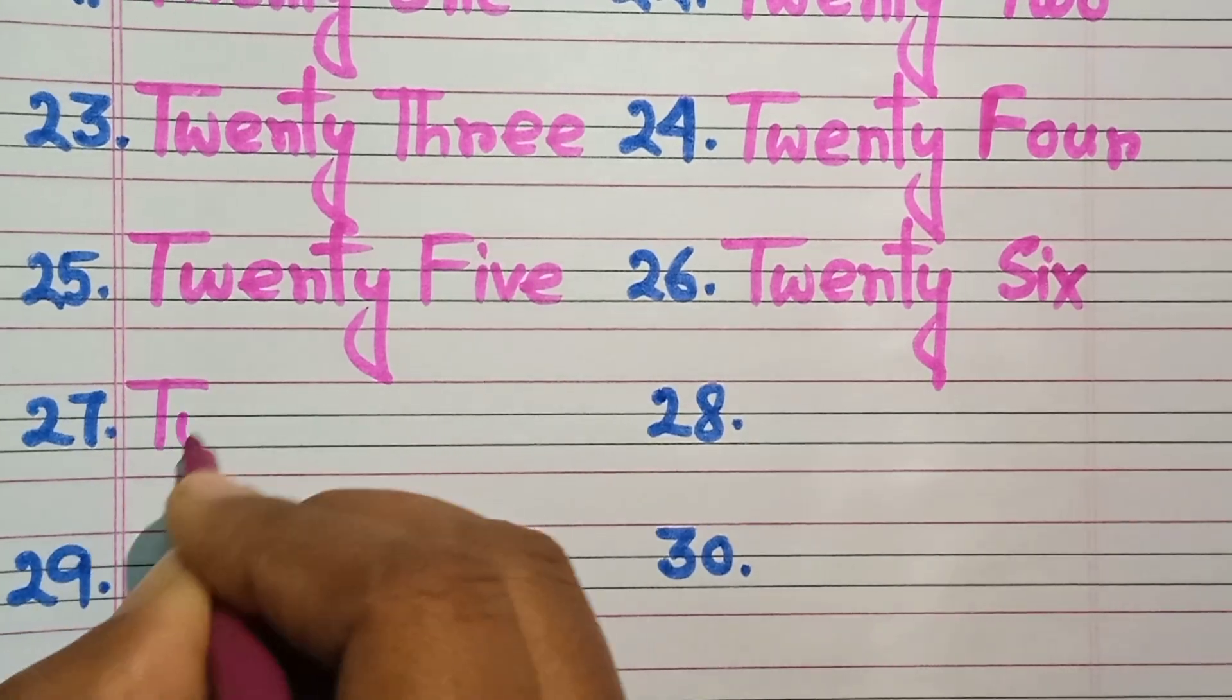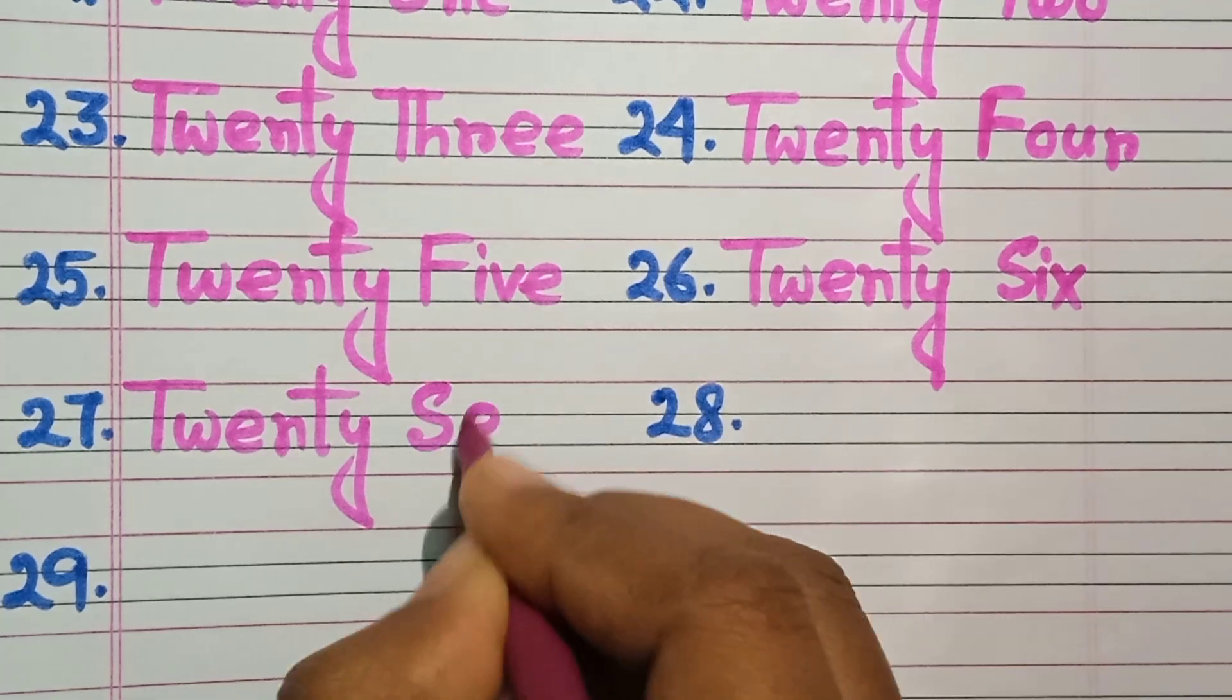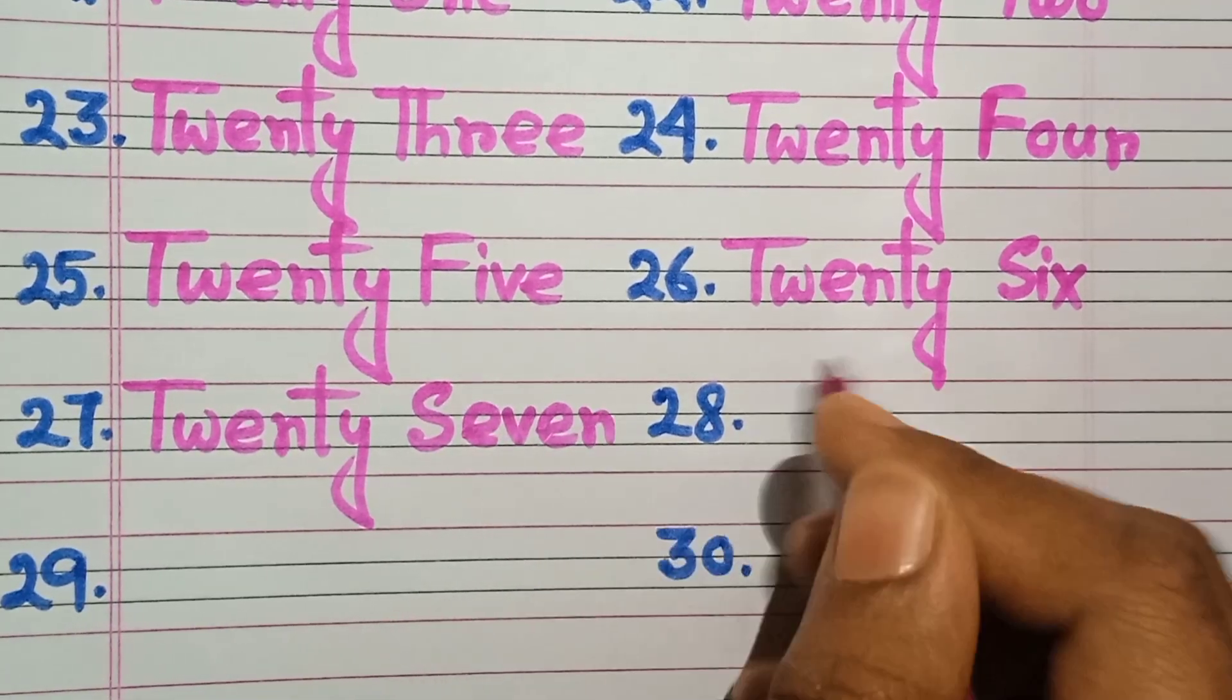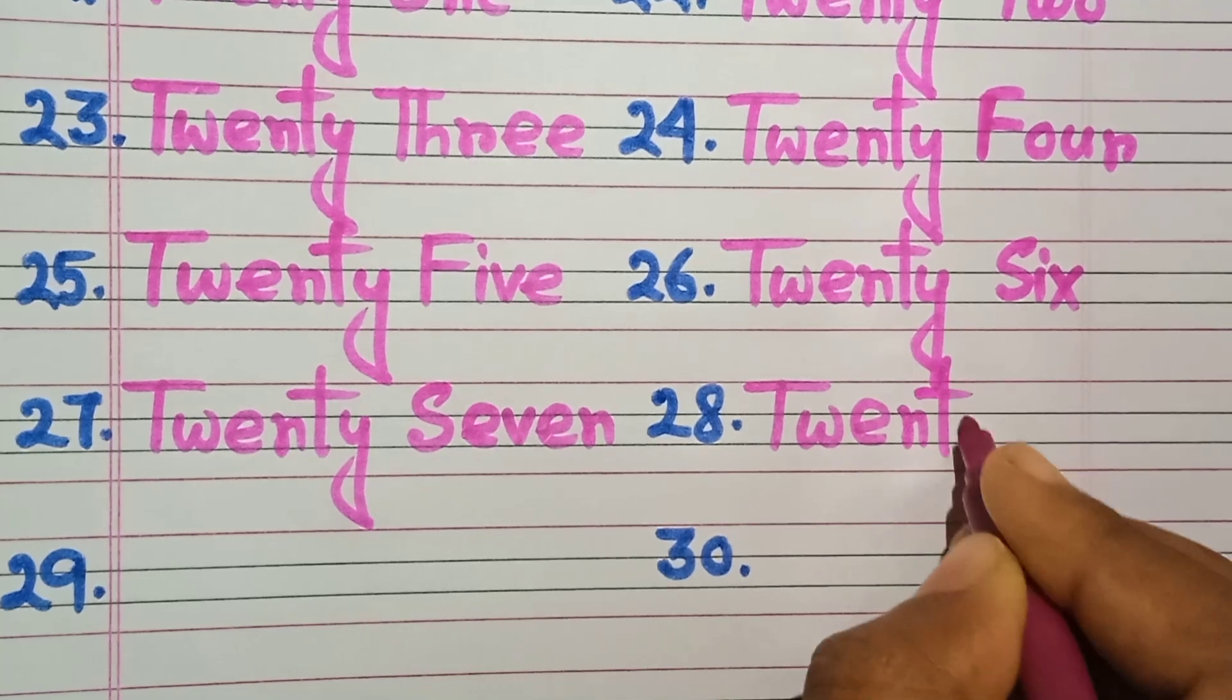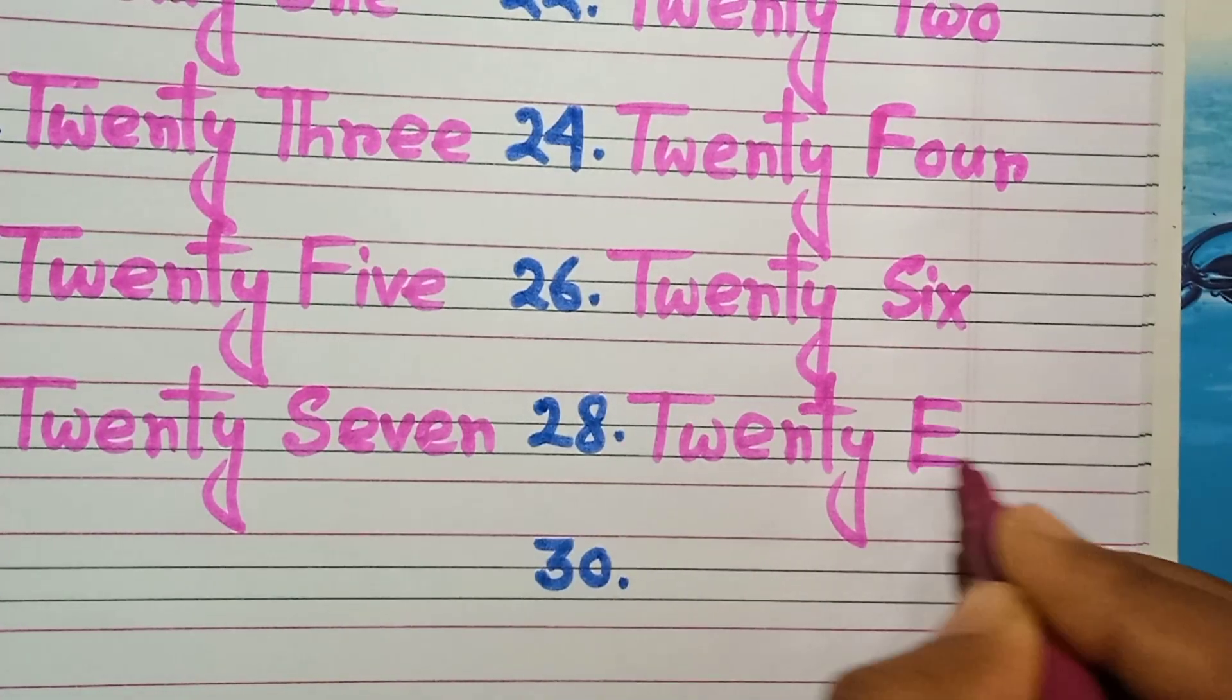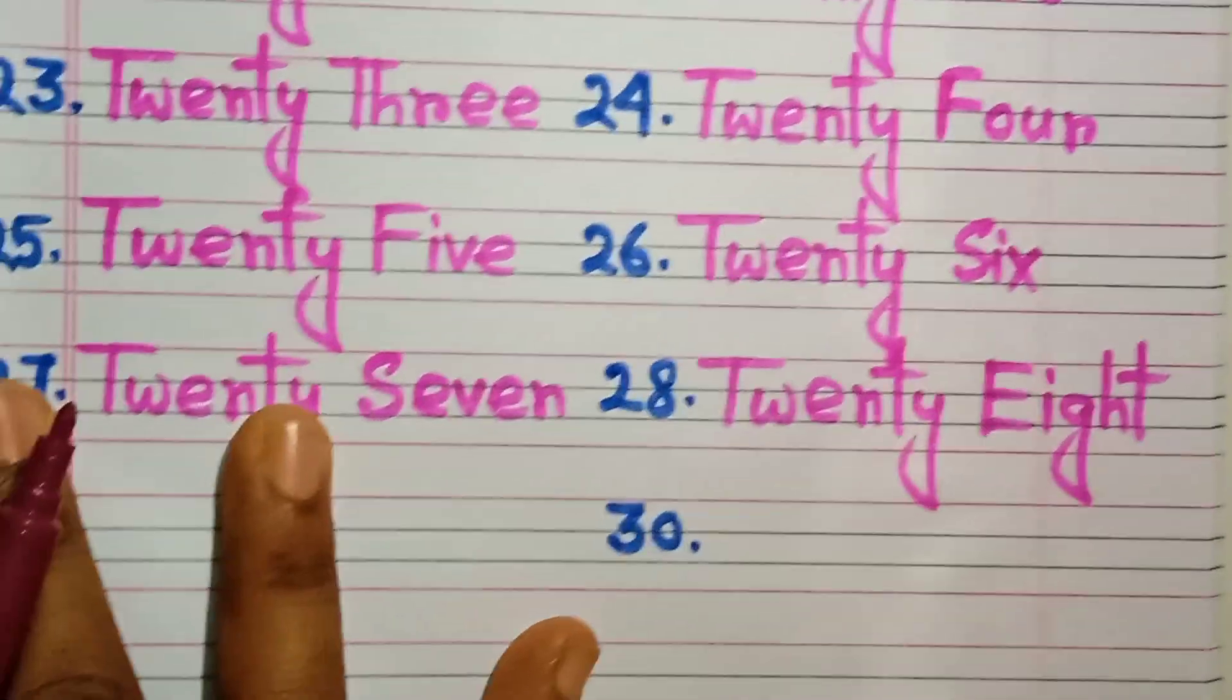27. Twenty-seven. T-W-E-N-T-Y, twenty. Seven, S-E-V-E-N. 28. Twenty-eight. T-W-E-N-T-Y, twenty. Eight, E-I-G-H-T, 28.